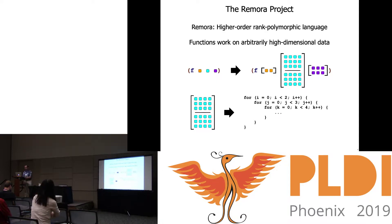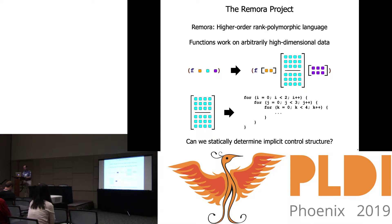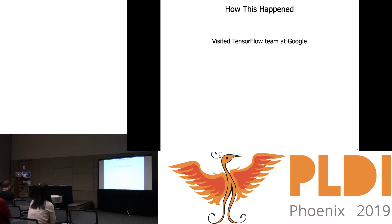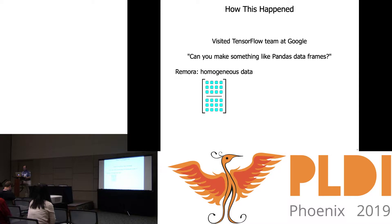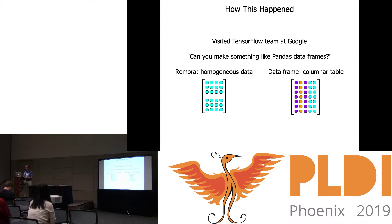Remora started out as a project to try to infer that implicit control flow at compile time. The story behind this talk actually started from a visit to Google last year, where we were giving them an explanation of how Remora works. One of them asked: could you make something like Pandas data frames as a library in Remora? This is an interesting question because Remora is really about homogeneous data, whereas a data frame is this sort of heterogeneous columnar data table.